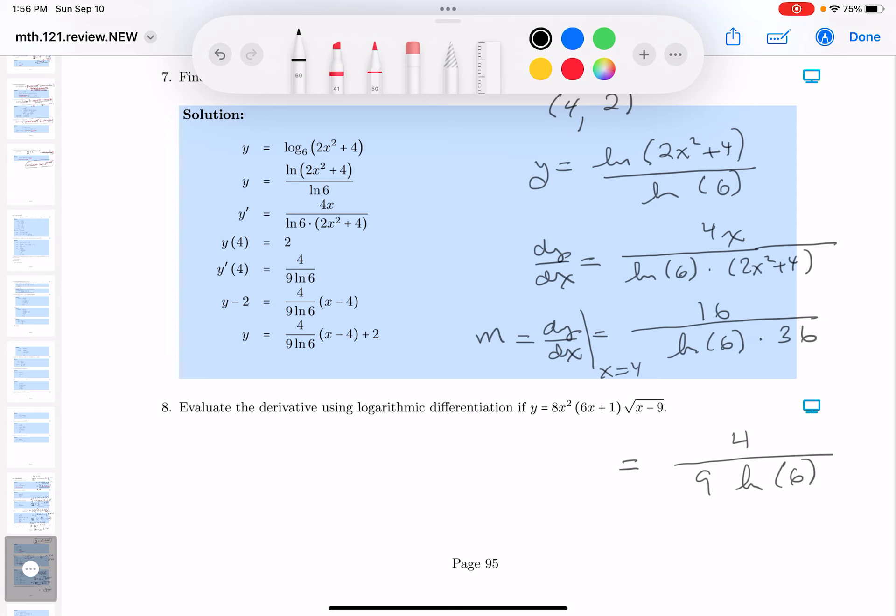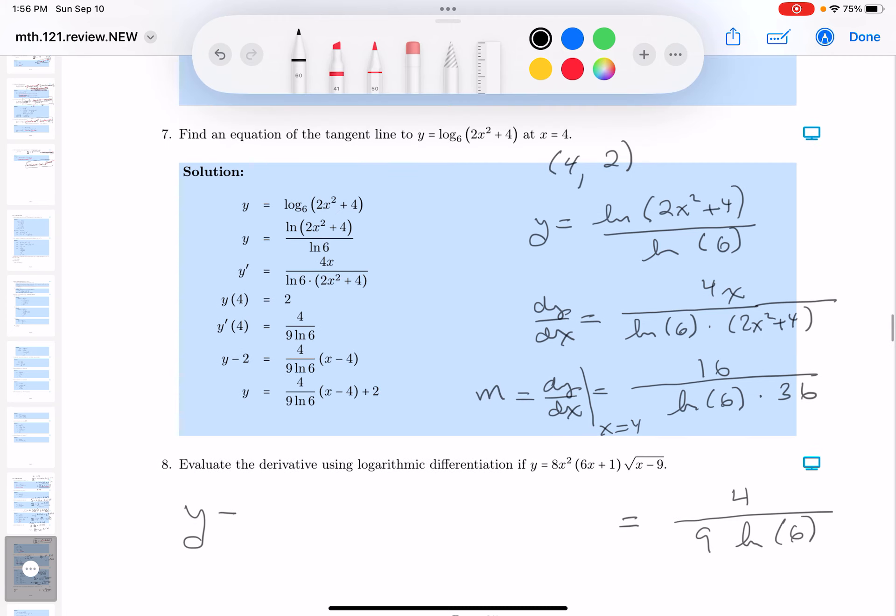But I can write the equation of the tangent line down, which is going to be y minus y1. Let me remind you, this is our point. So it's going to be 2 equals 4, this is the slope, 9 ln 6. And this is going to be x minus 4. I'd say it's a good-looking answer.